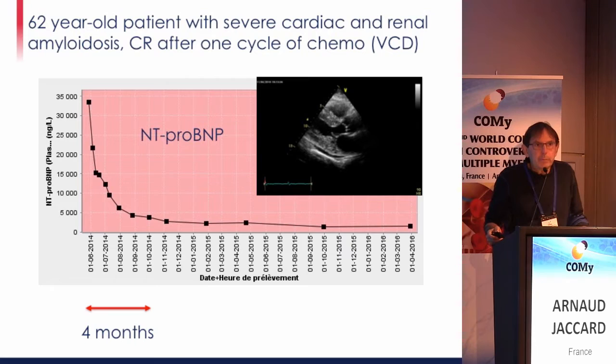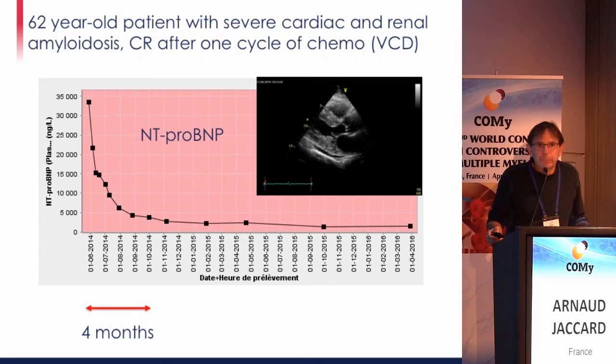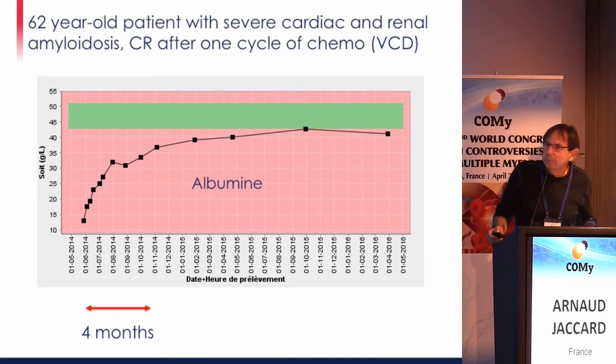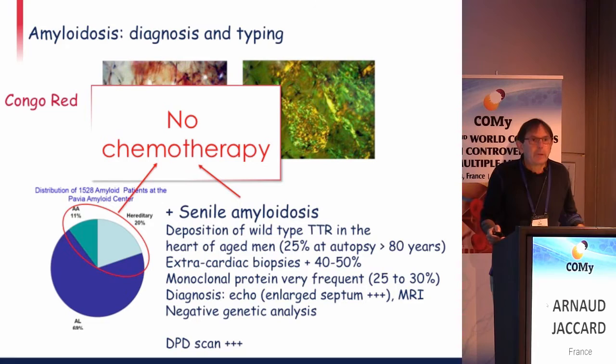You can have a rapid improvement of cardiac disease after hematologic response. In this patient with very severe cardiac and renal amyloid disease, after a complete rapid hematologic response, the NT-proBNP dropped from more than 30,000 to less than 5,000 in less than four months. Interestingly, the kidney disease also showed very rapid improvement, with albumin going from less than 15 to near normal in less than one year.